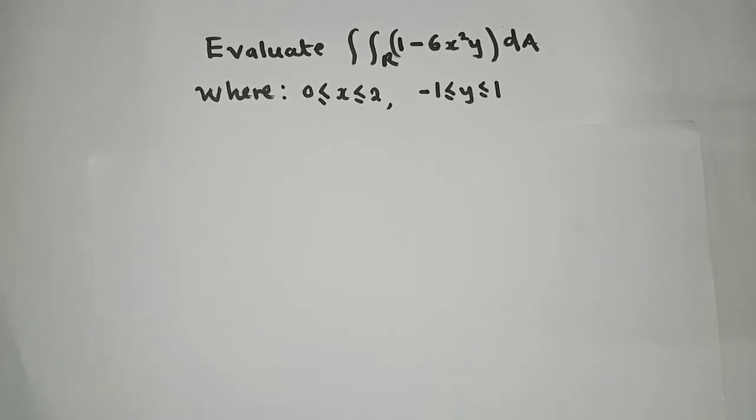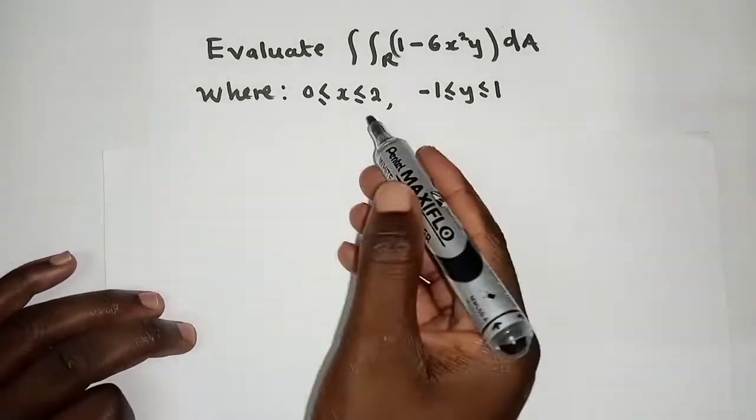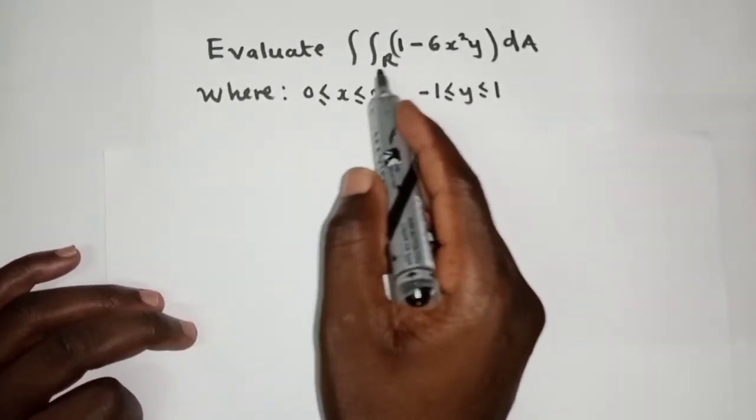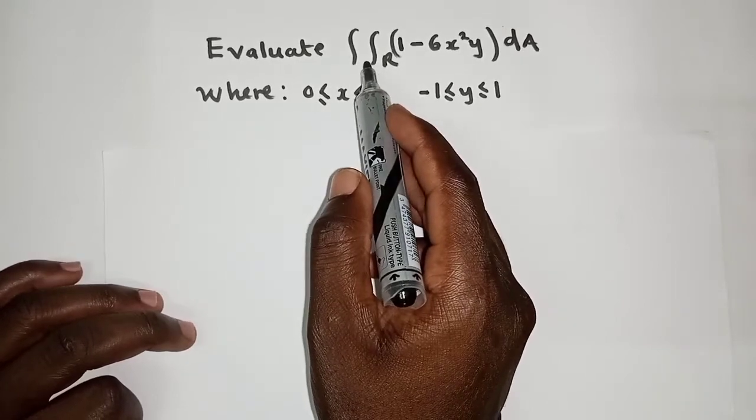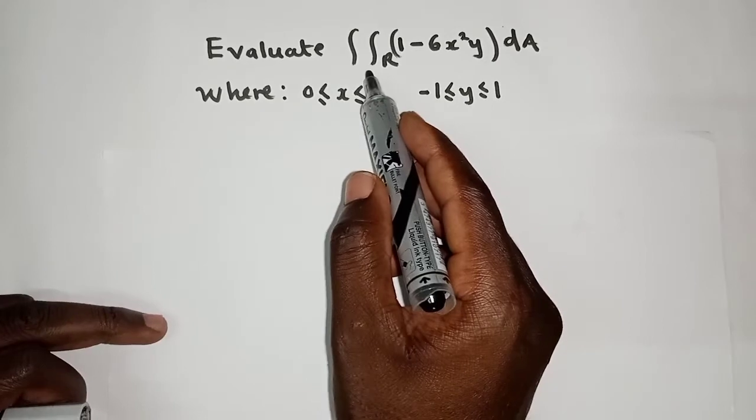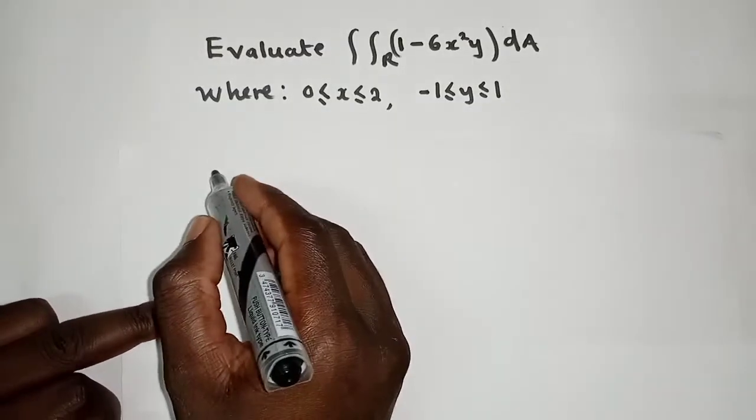So how do you integrate this one? Very simple actually. Check what we have here - these are two integral signs, so it tells us that this is a double integral.